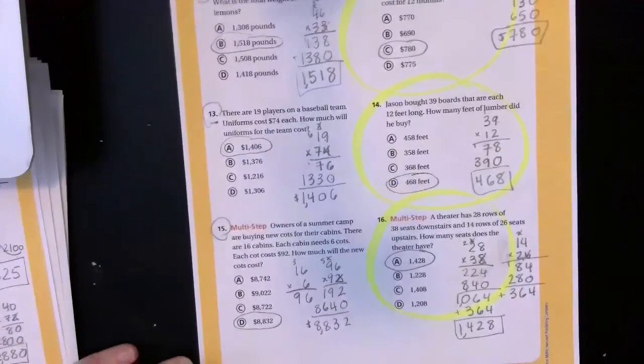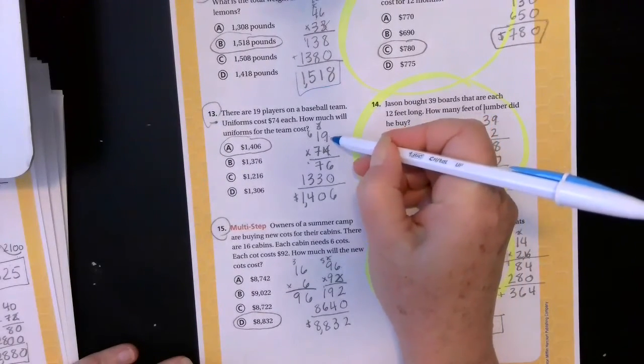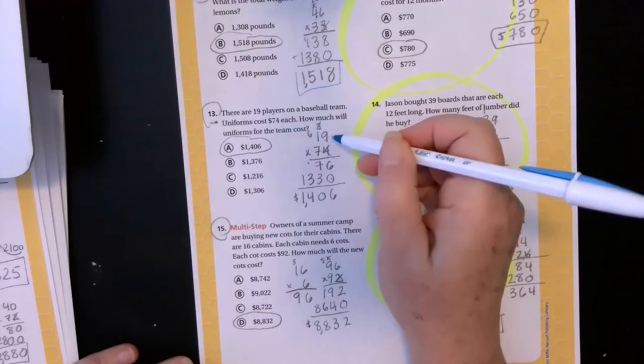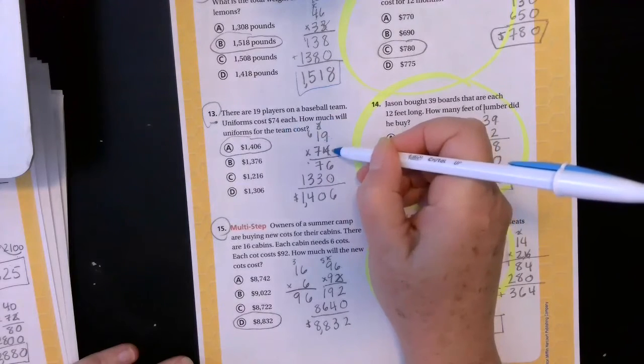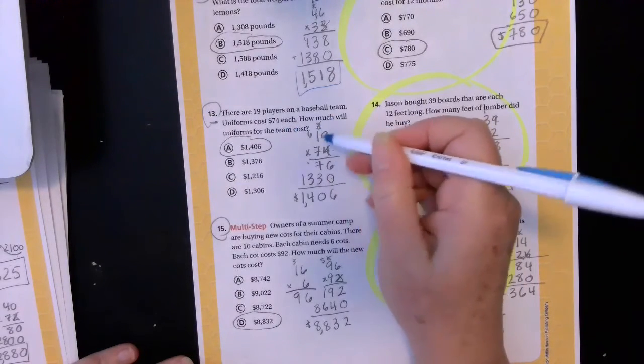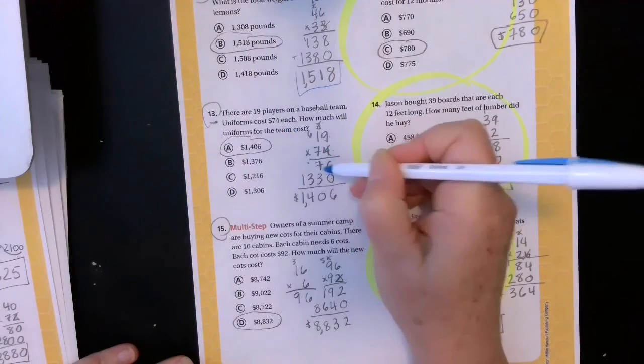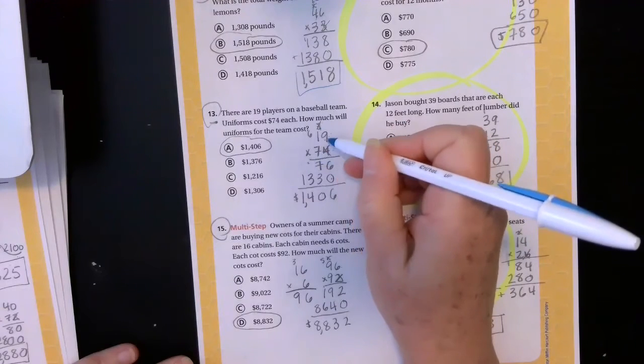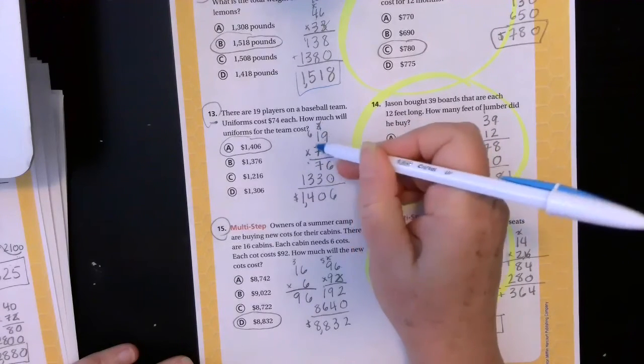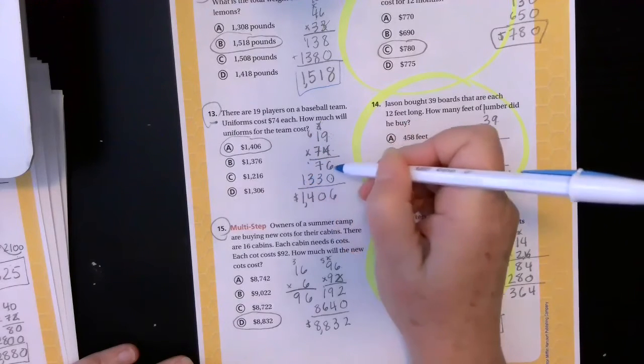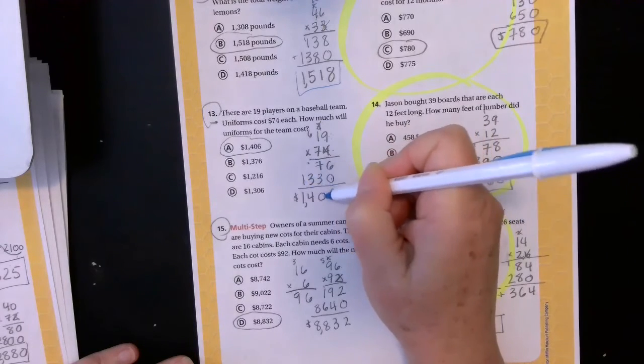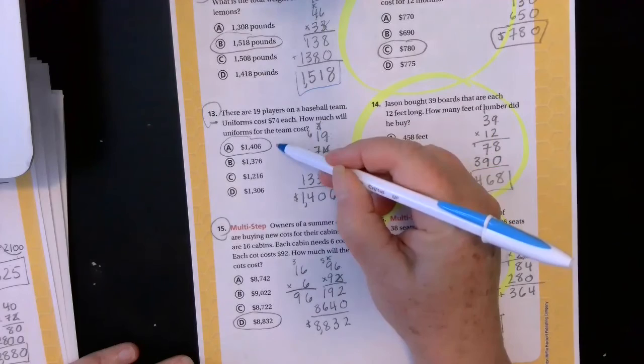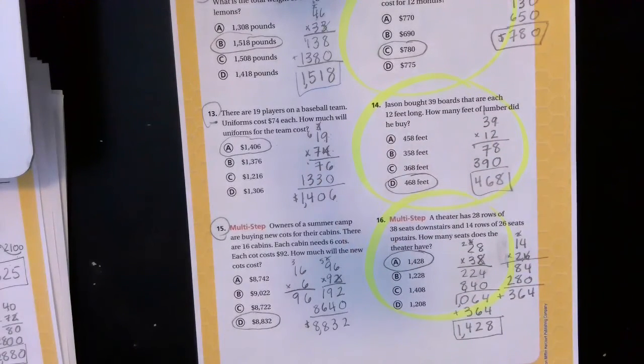So number 13, there are 19 players on a baseball team. Uniforms cost $74 each. How much will uniforms for the team cost? So 19 players each have to pay $74 for their uniform. Multiply that out. Four times nine is 36. Put down my six, carry my three. Four times one is four. Plus three is seven. Put down my zero. Cross out my ones place and everything to do with my ones place. Multiply by my tens place. Seven times nine is 63. Put down my three, carry my six. Seven times one is seven. Plus six is 13. Add them together. Six plus zero is six. Seven plus three is 10. Put down my zero, carry my one. One plus three is four. Nothing plus one is one. So the team's going to spend $1,406 for their uniforms. Glad my kids didn't play baseball.